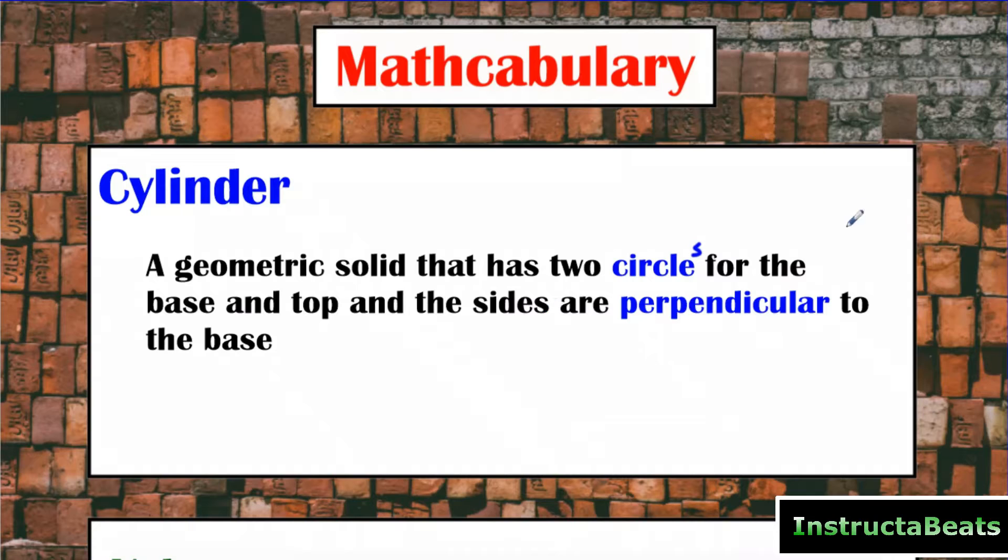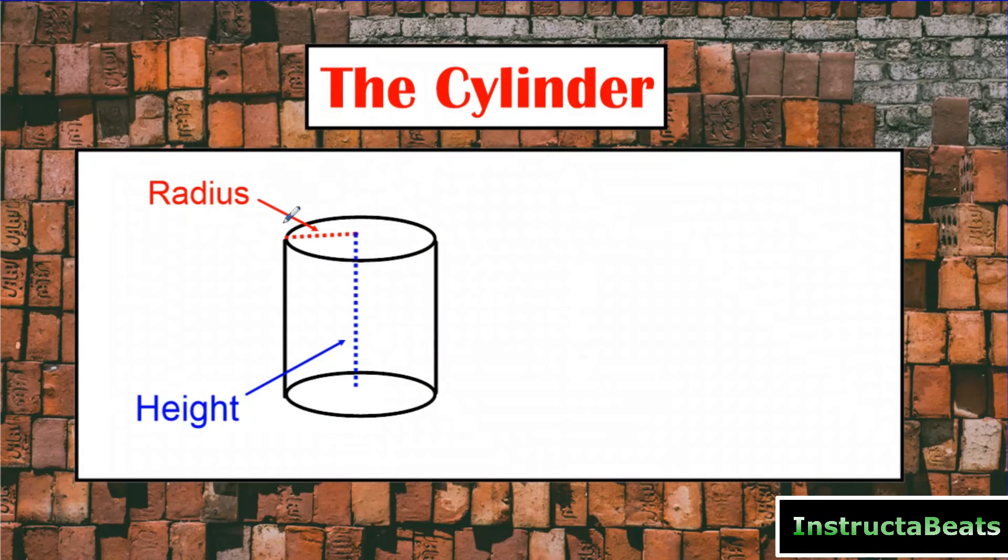So let's take a closer look at a picture of this and really talk about what a cylinder is and how it's different than a right prism. So here we have our cylinder and you can see that we have a circle for the top and a circle for the bottom.